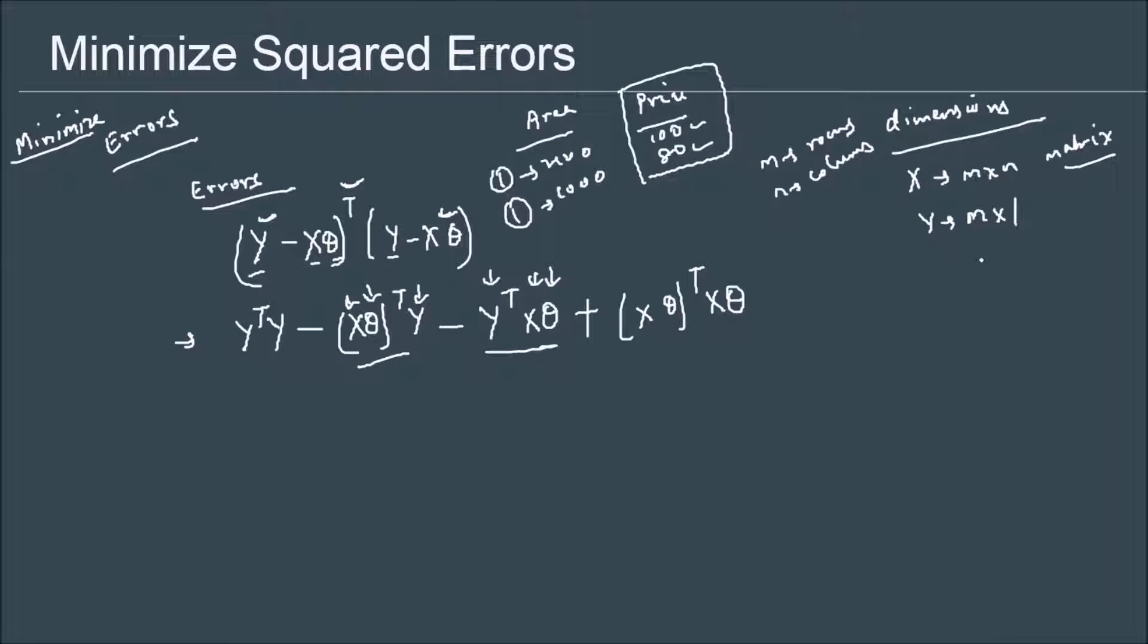Now theta, on the other hand, for only one independent variable area, we have theta 0 which is a constant and the theta 1. Those will be equal to the number of columns that I have in this data if I introduce ones. So this will be an n cross 1 vector. Y is of course again a vector.